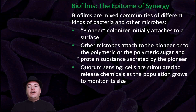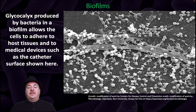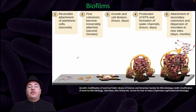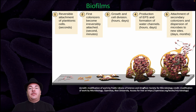Speaking of synergism, we can have biofilms — mixed communities of different kinds of bacteria and other microbes. The pioneer colonizer initially attaches to a surface, and other microbes attach to the pioneer or to the polymer, sugar, and protein substances secreted by it. Through quorum sensing, cells are stimulated to release chemicals as the population grows to monitor its size. The glycocalyx produced by bacteria in a biofilm allows cells to adhere to host tissues and to medical devices such as catheter surfaces. Biofilm formation begins with reversible attachment of planktonic cells, followed by irreversible attachment of first colonizers, growth and cell division, production of extracellular polymeric substances, formation of water channels, and finally attachment of secondary colonizers and dispersion of microbes to new sites.